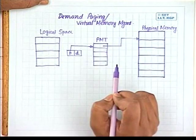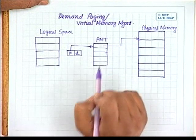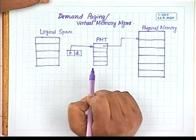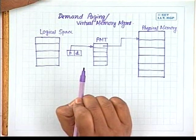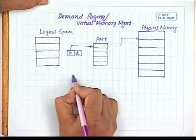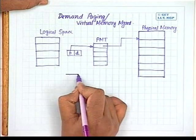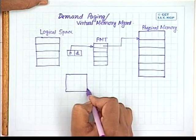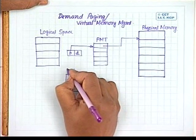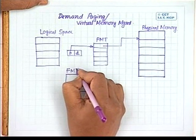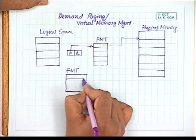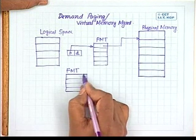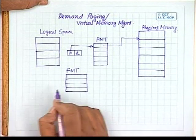In addition to having a pointer to the physical memory, we also need pointers to addresses in the secondary storage where pages are contained. Along with the page map table, we will have another table for every job called the file map table or FMT. This file map table gives you the address on secondary storage which contains different pages of the logical address space, and its entries point to different blocks in secondary storage containing those pages.